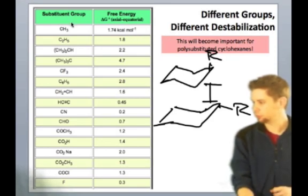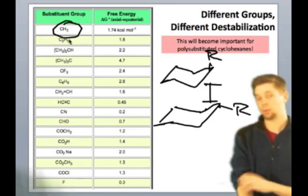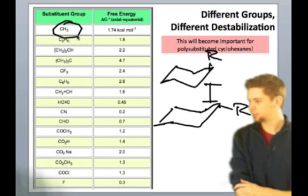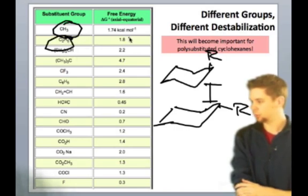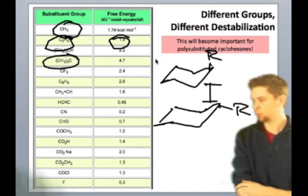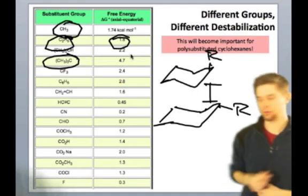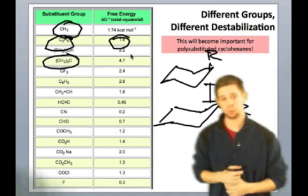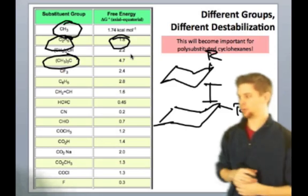We see that the smallest group, CH3, has a value of only 1.74 kilocalories per mole. As we increase it to ethyl, we're only up to 1.8, which is an interesting observation. But when we finally get to tert-butyl, we make a huge jump from 2.2, which is the isopropyl group, to the tert-butyl group at 4.7.